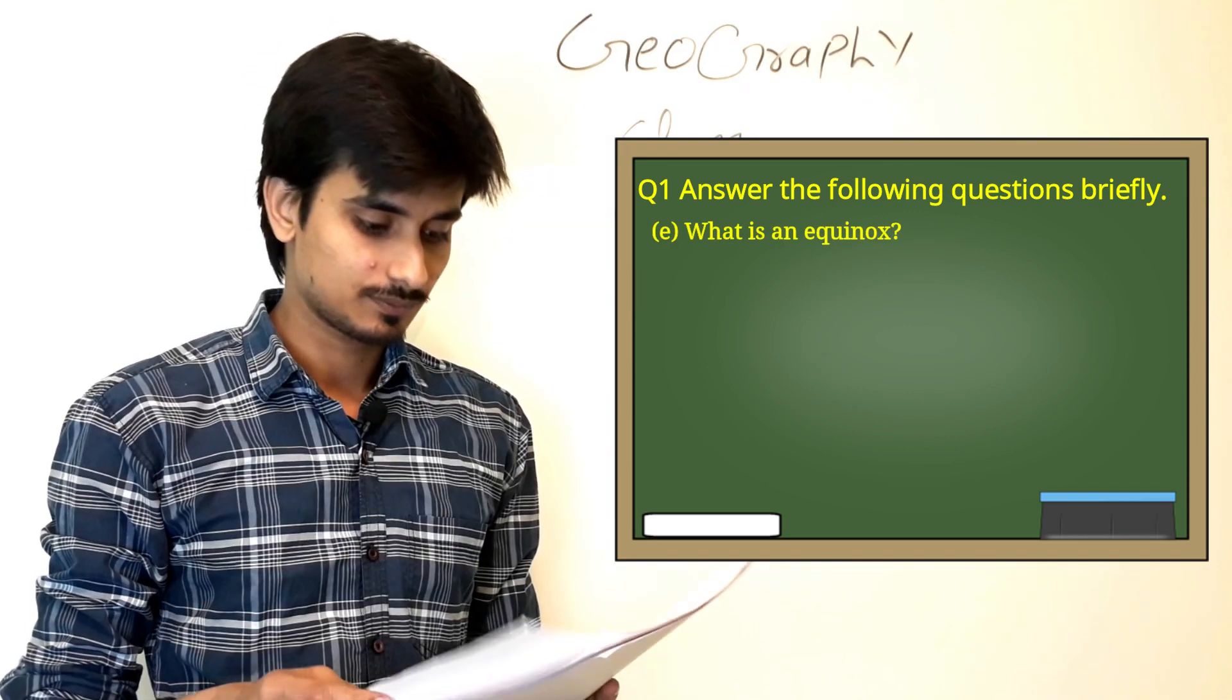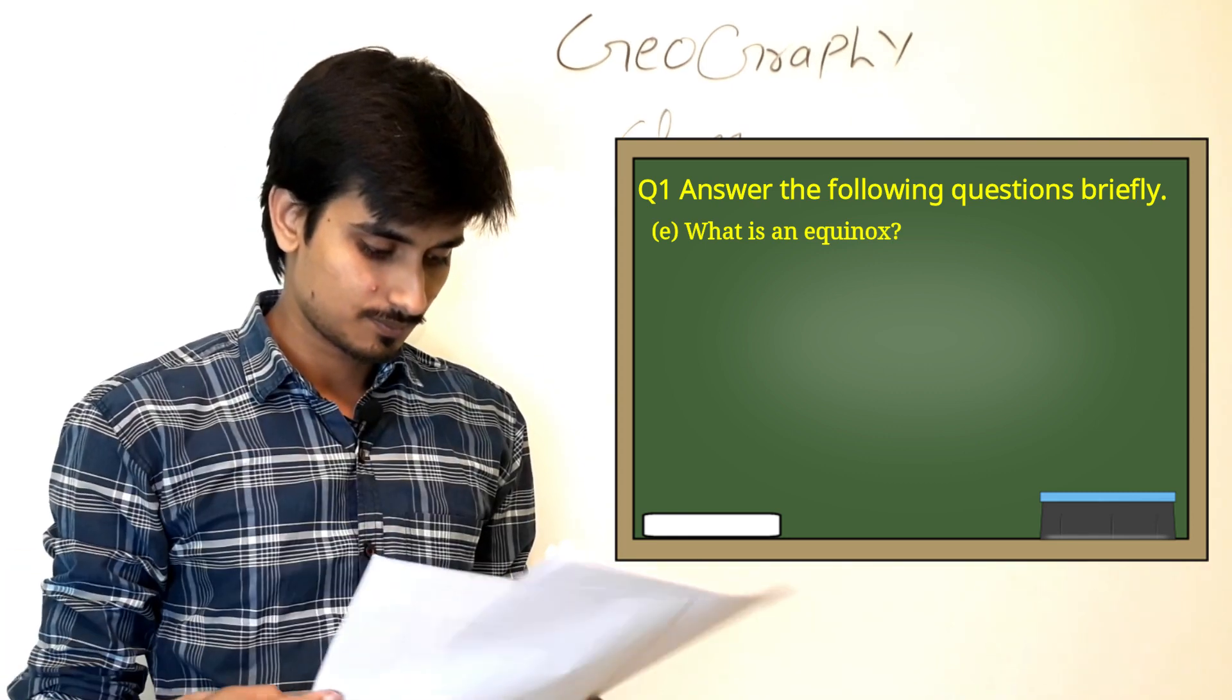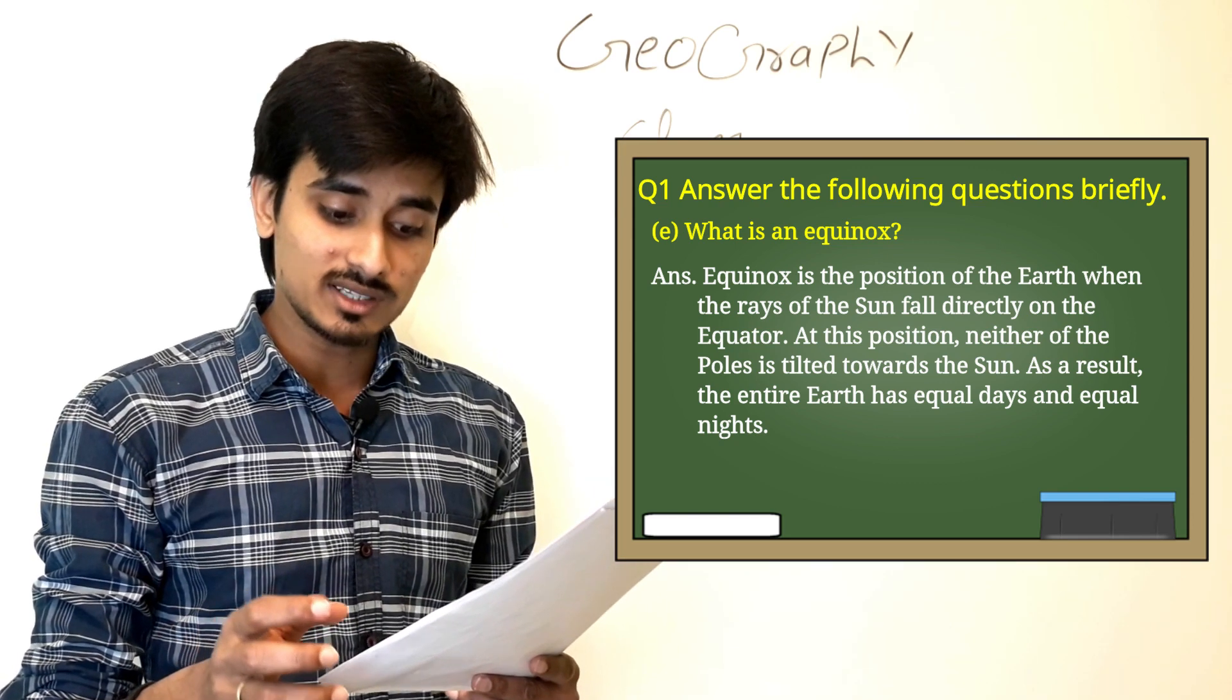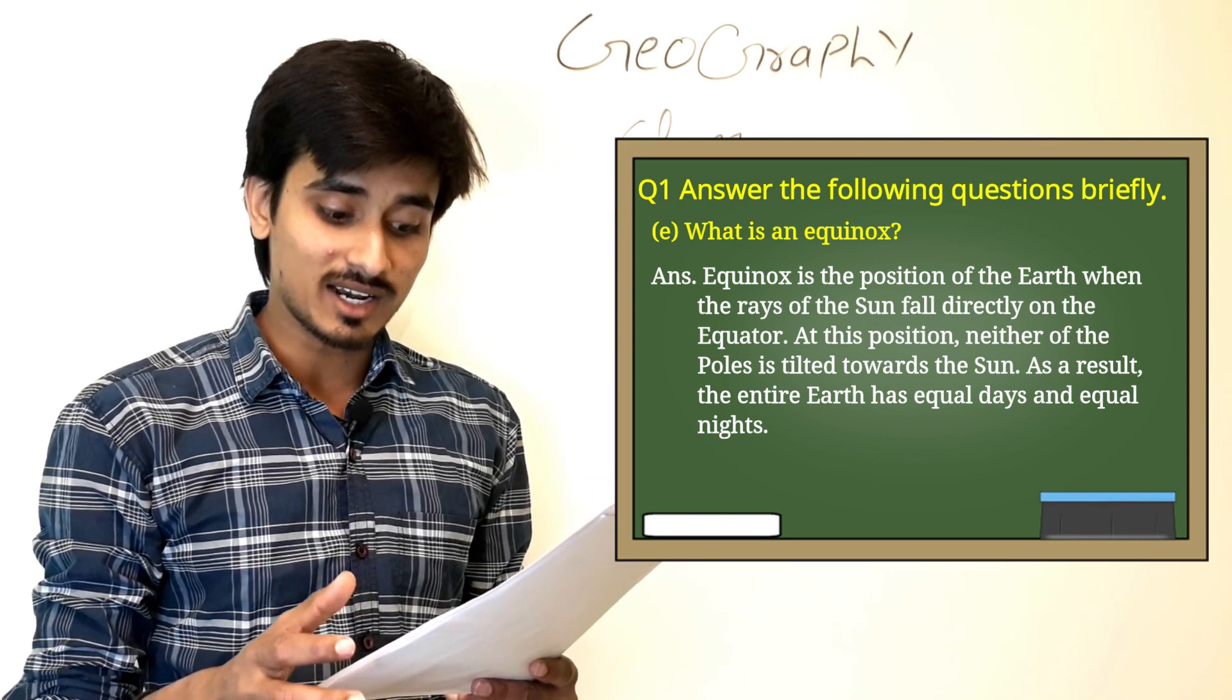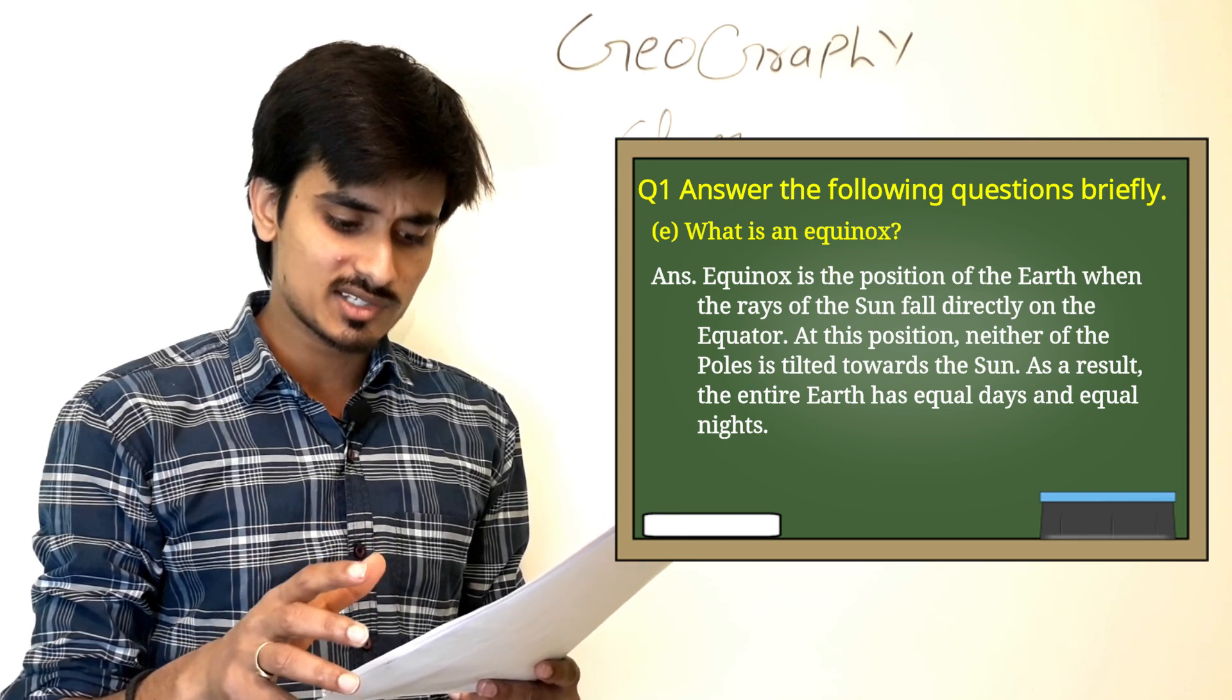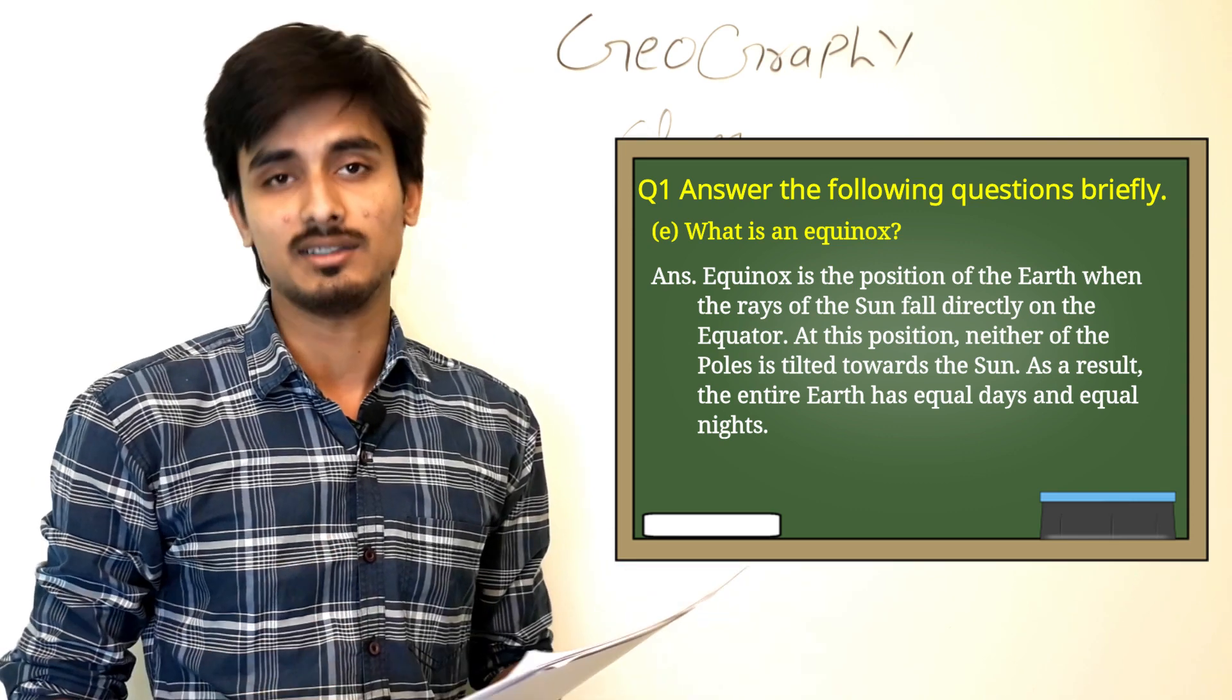E. What is an Equinox? So answer is: Equinox is the position of the Earth when the rays of the Sun fall directly on the equator. At this position, neither of the pole is tilted towards the Sun. As a result, the entire Earth has equal days and equal nights.